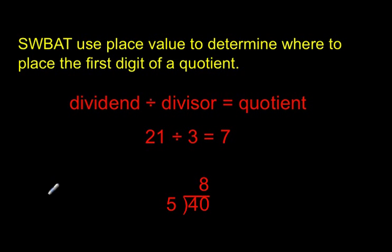Hello. In this video, I'll be teaching you how to use place value to determine where to place the first digit of a quotient. Just a quick review of some division terms. A dividend is the number that we are dividing, sharing equally. The divisor is the number of groups that we're sharing with. And the quotient is the answer, or the number that each group will receive. So 21 divided by 3 equals 7. 21 is the dividend, 3 is the divisor, 7 is the quotient.